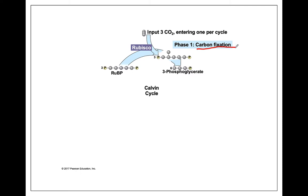Here is our first phase: carbon fixation. We're going to take three carbon dioxides, showing what it looks like to do the cycle three times simultaneously. The Calvin cycle is happening in all sorts of locations within the stroma — not in sequence, but in tandem. We have three molecules of RuBP, ribulose bisphosphate. The enzyme Rubisco is going to take the carbons and attach one to each RuBP.